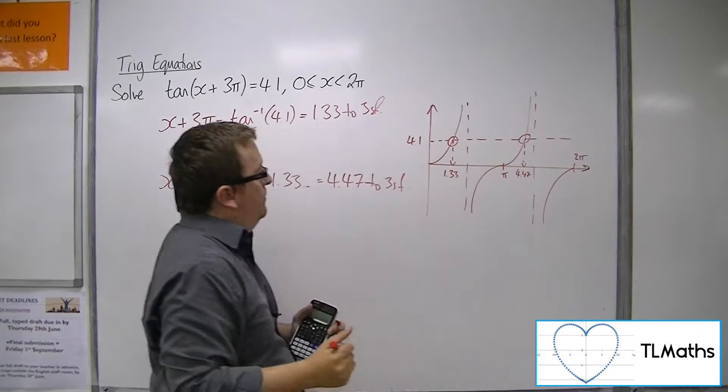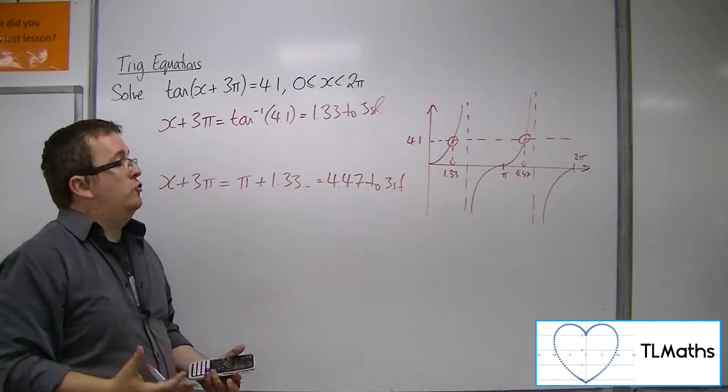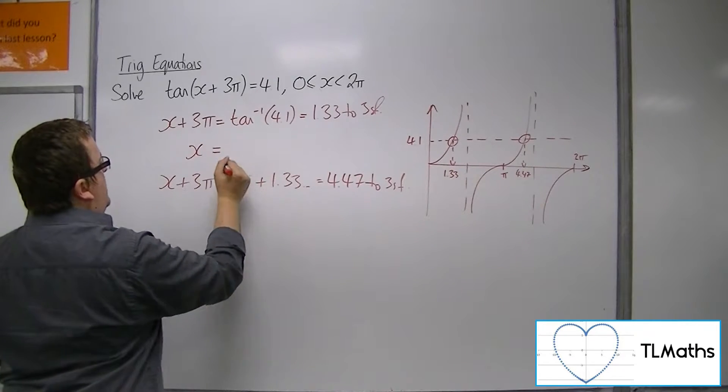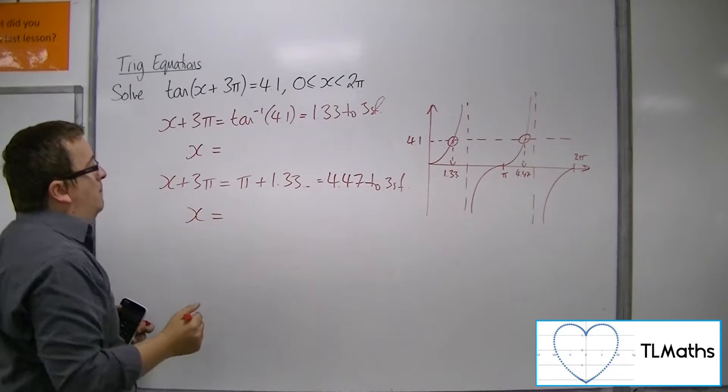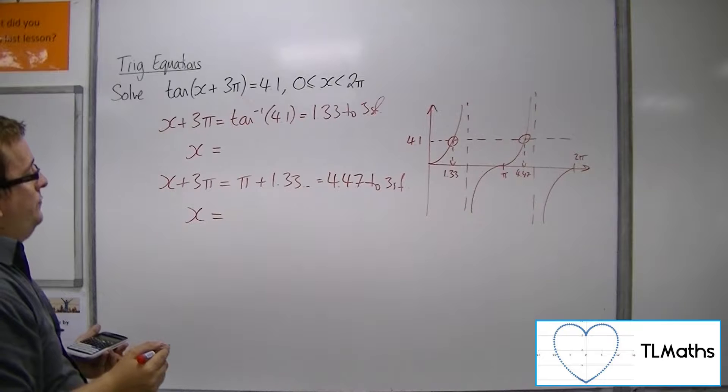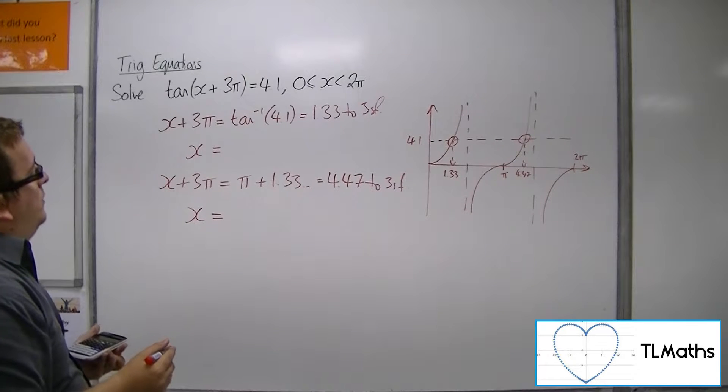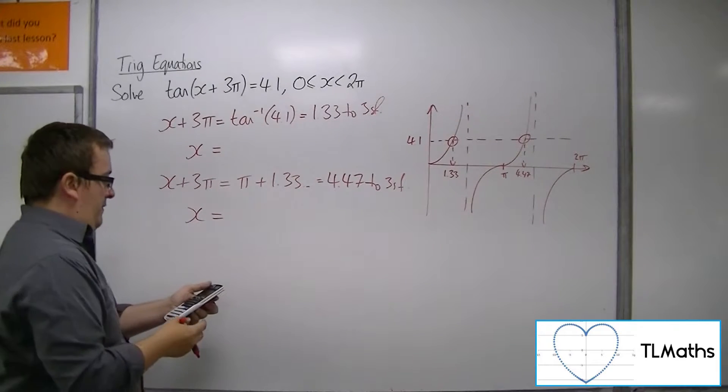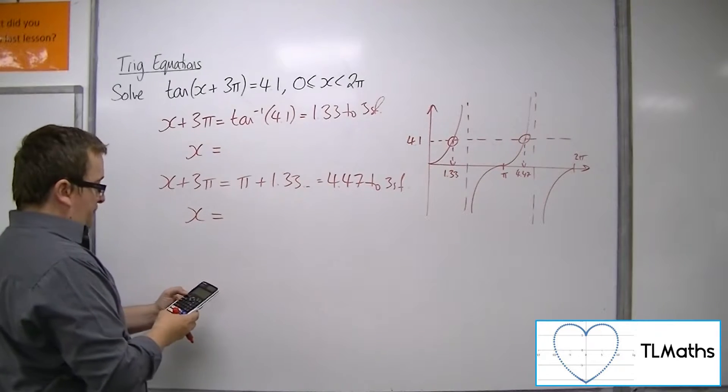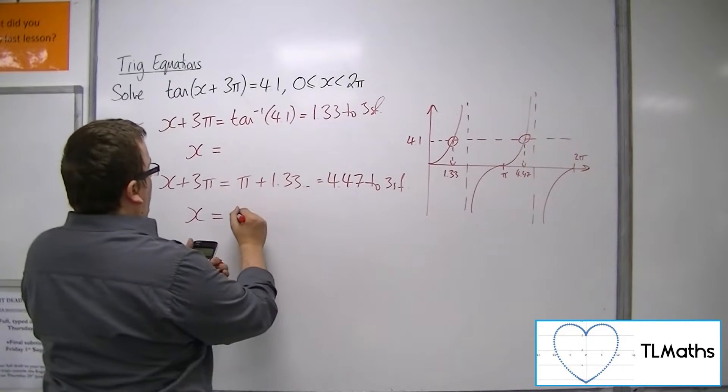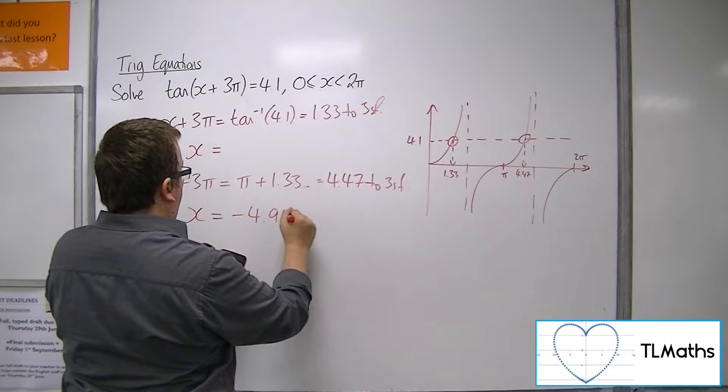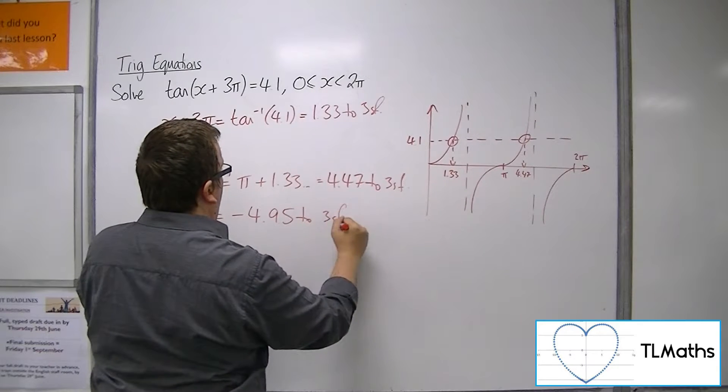So now you want to apply the transformation. So subtract 3π from both sides. So 1.33 and 4.47. So that gets me minus 4.95 to 3 significant figures.